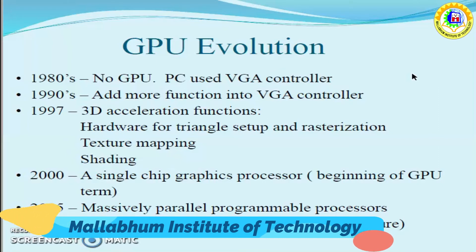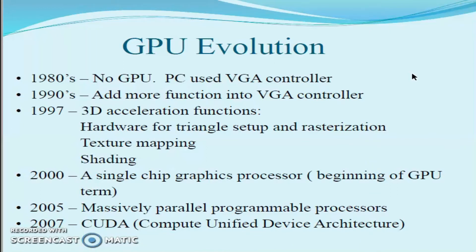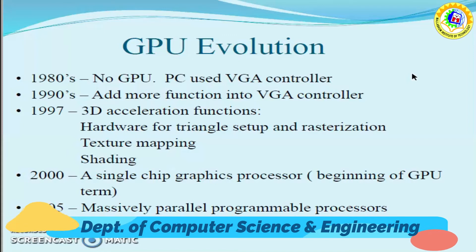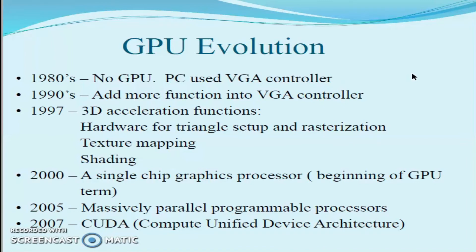In the 1980s, there was no GPU — PCs only used a VGA controller. In the 1990s, more functions were added to the VGA controller. Around 1997, 3D acceleration functions appeared, such as hardware for triangle setup, texture mapping, and shading. By 2000, a single-chip graphics processor emerged — the beginning of the GPU. By 2005, massively parallel programmable processors arrived.